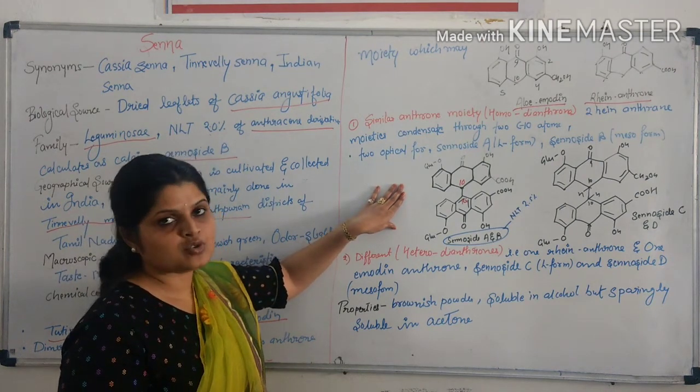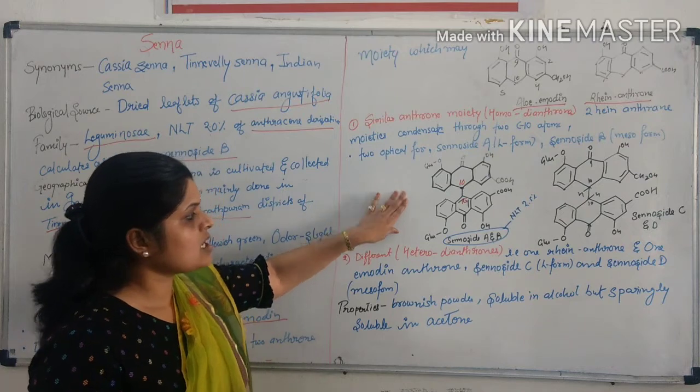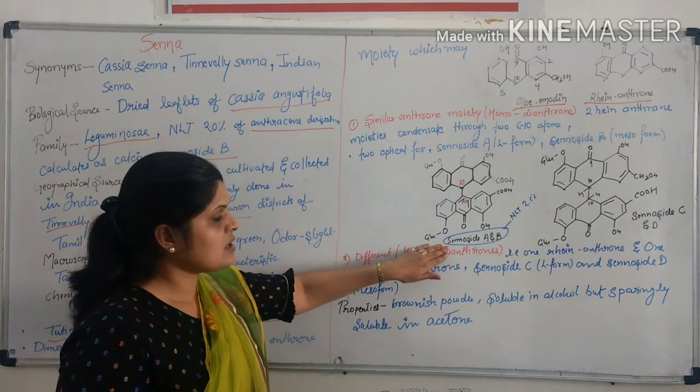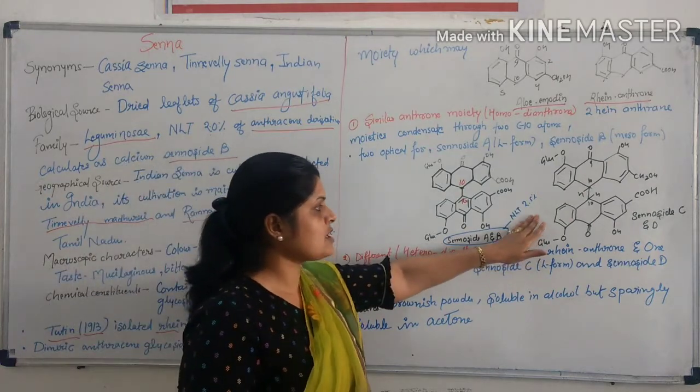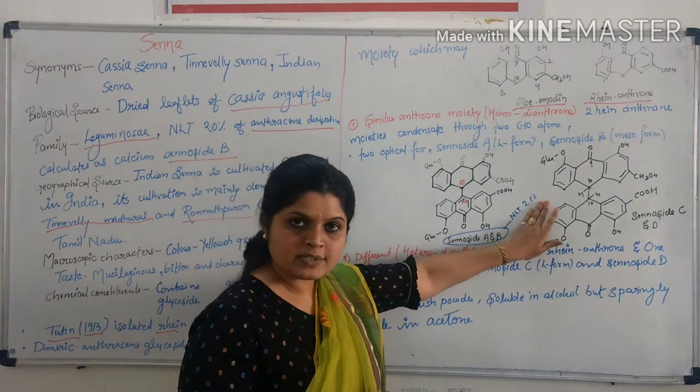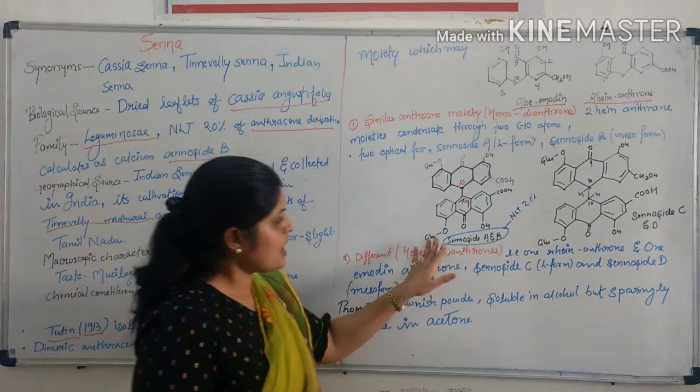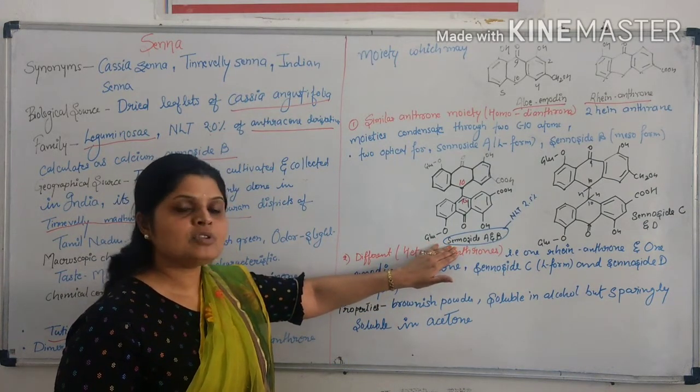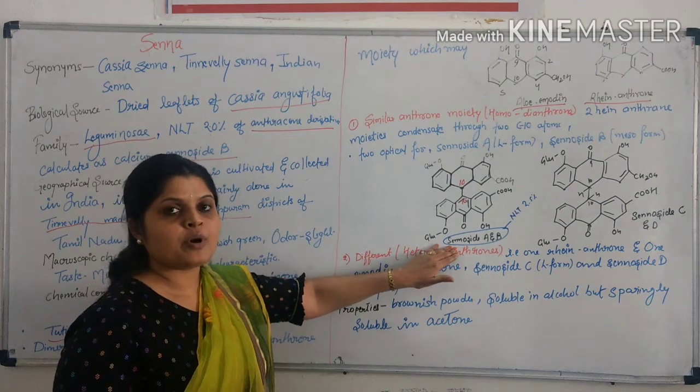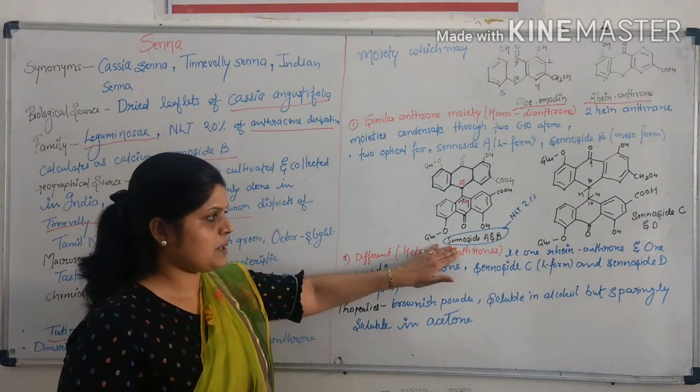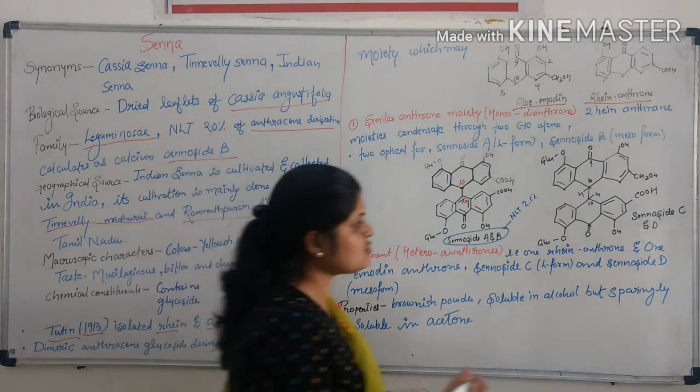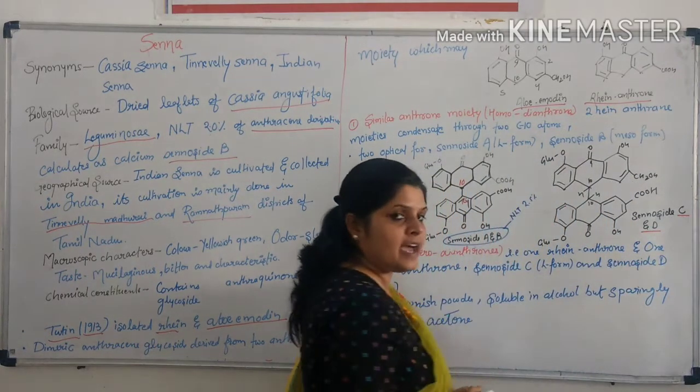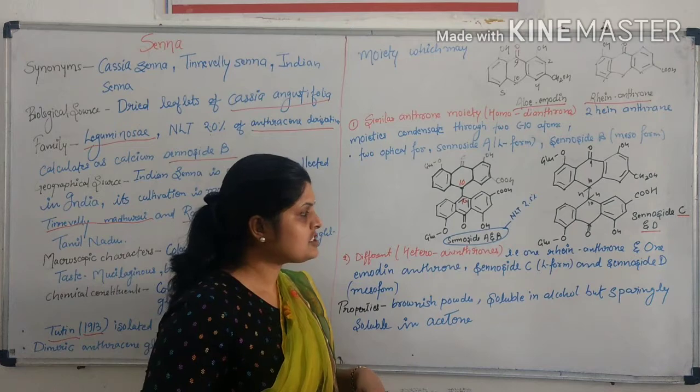Sennoside A and sennoside B are present not less than 2.5%, and sennoside A and sennoside B both are responsible for purgative activity.